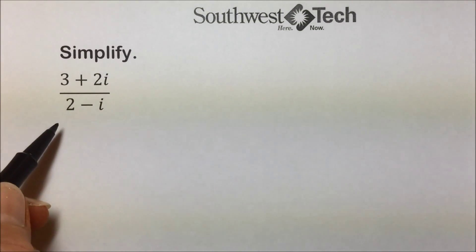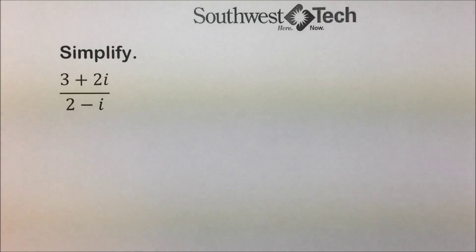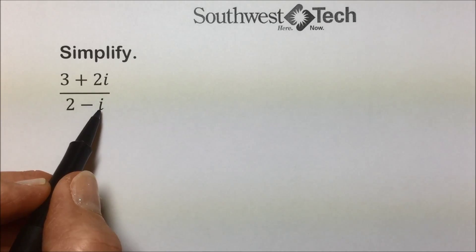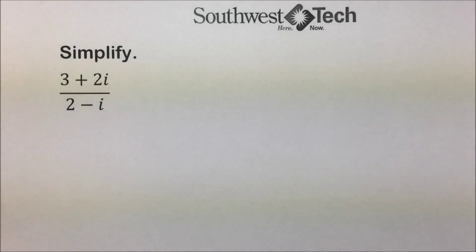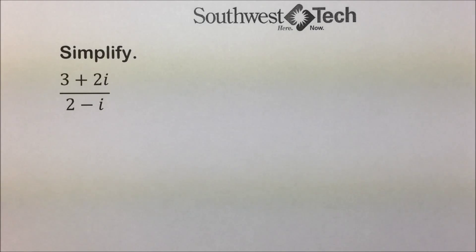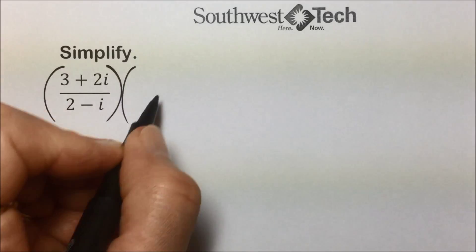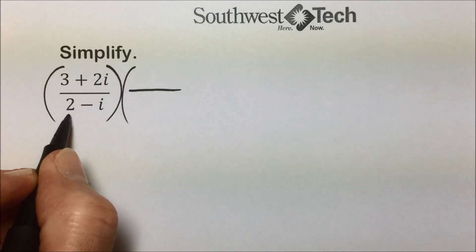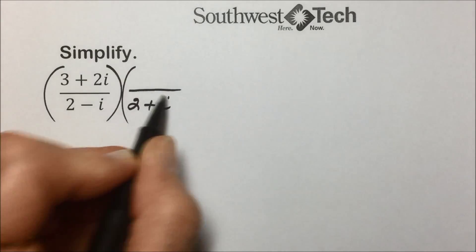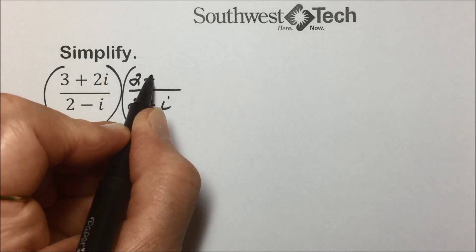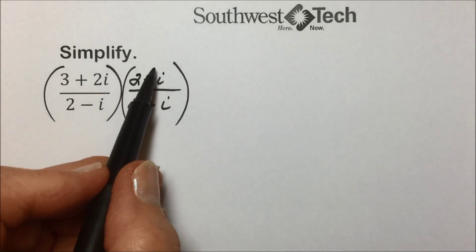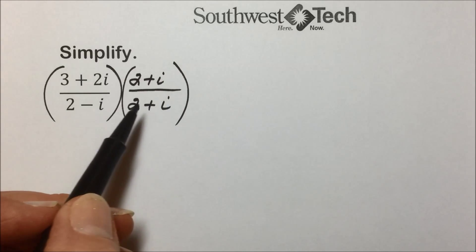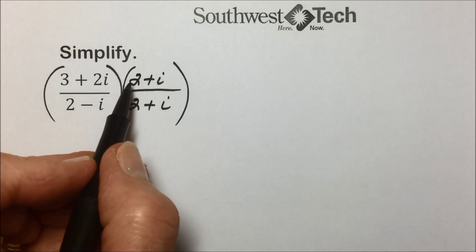In the first example, they're asking us to simplify the following. We really can't do division in the complex number system, and i is the square root of negative one, so we have just a different version of a radical. What we can do is eliminate that radical — the square root of negative one that i represents — from the denominator. To do that, we'll multiply by the conjugate of the denominator. The conjugate of two minus i is two plus i, and what we multiply the denominator by, we multiply the numerator by, because this expression is equivalent to 1.